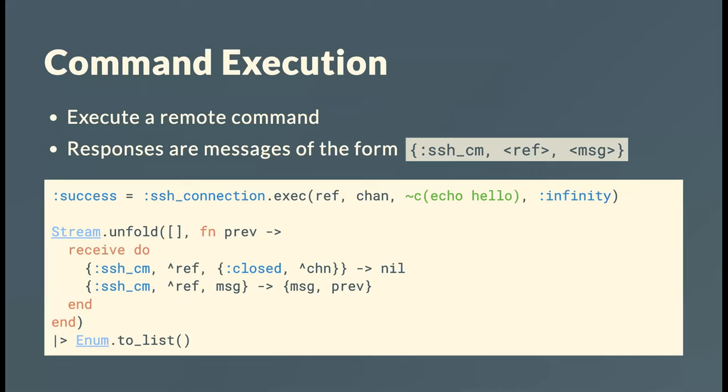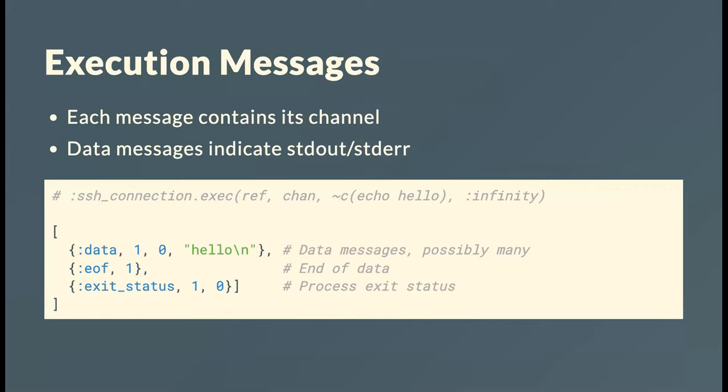When you invoke a remote process this way, you get a data message — potentially many of them depending on how data gets shuffled down. You get an end-of-file message saying the stream has finished, and then a message telling you what the process exited with. There's also information about which channel the messages are coming back on, since you can have multiple channels in flight at once. In the data channel, you also get told whether data was sent to stdout or stderr.